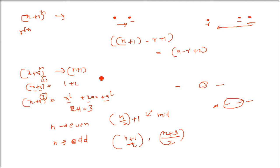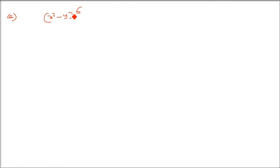Now let us look at different types of questions. We will try to cover all flavors and also the NCERT questions. The first type: find the general term or an indicated term in a given binomial expression. The question is (x² - y)^6 — find the general term.